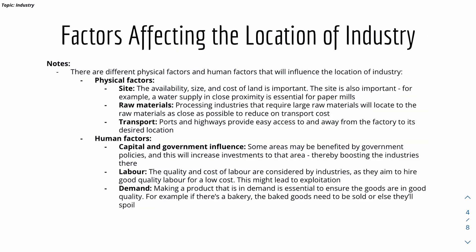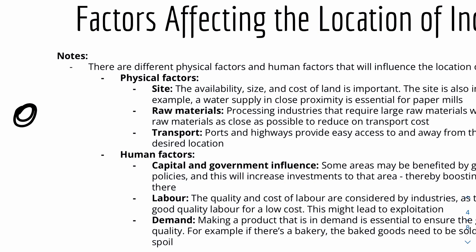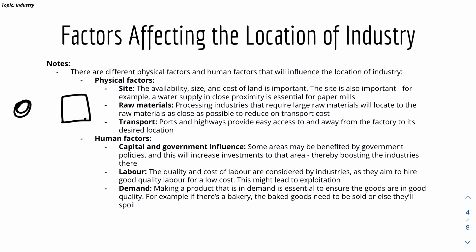There are factors affecting the location of industry: physical factors and human factors. Physical factors include site — the place where the factory is built — determined by the availability, size, and cost of land. Some industries also need a nearby water supply, for example paper mills. Raw materials are also important: processing industries that require large amounts of raw materials will locate as close as possible to them to reduce transport costs — for example, building a factory right beside a mine. Transport is also key, as ports and highways provide easy access to and from the factory.